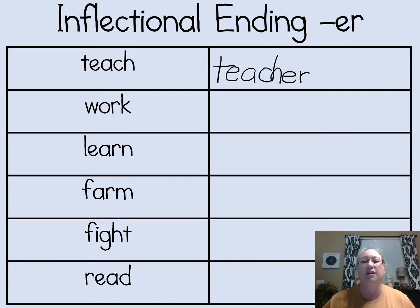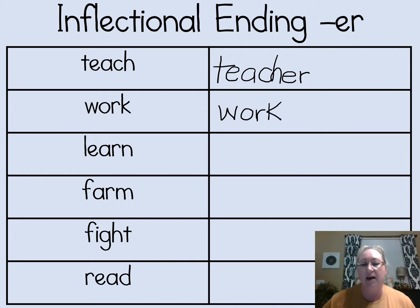Our next word says work. Work is something you do — work is a verb. Let's write work. If I add the inflectional ending E-R to the end of work, I get worker. Now worker is a person — it's a person who works.